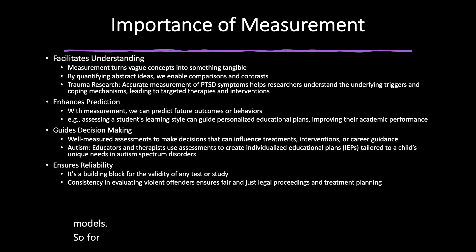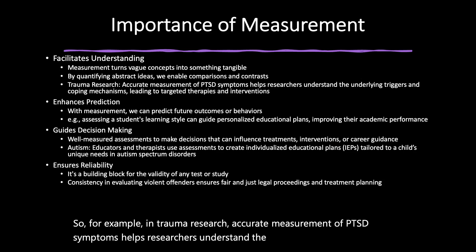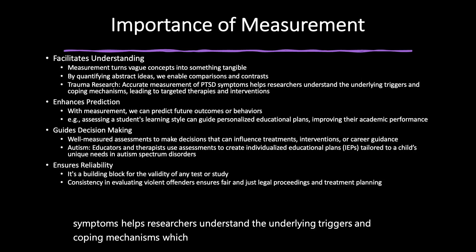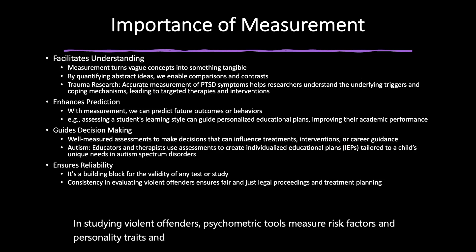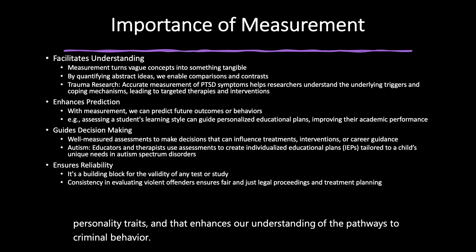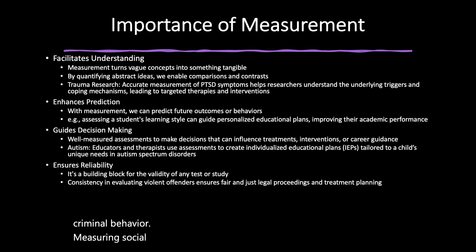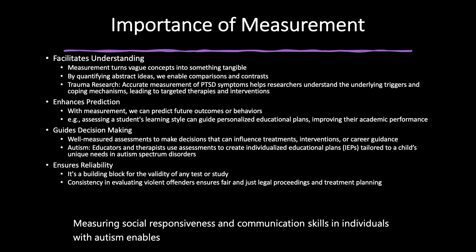For example, in trauma research, accurate measurement of PTSD symptoms helps researchers understand the underlying triggers and coping mechanisms, which leads to targeted therapies and interventions. In studying violent offenders, psychometric tools measure risk factors and personality traits, enhancing our understanding of the pathways to criminal behavior. Measuring social responsiveness and communication skills in individuals with autism enables researchers to develop interventions tailored to different severity levels.